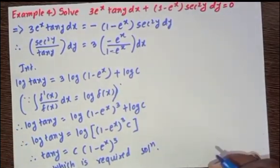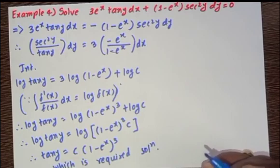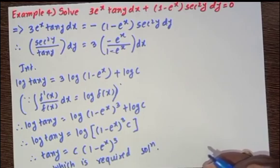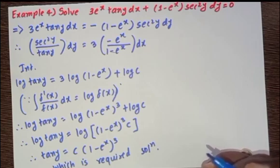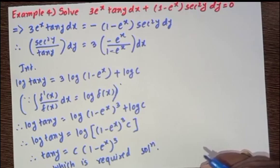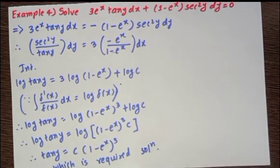These are the four examples explaining how to solve equations of the form f₁(x)dx + f₂(y)dy = 0.